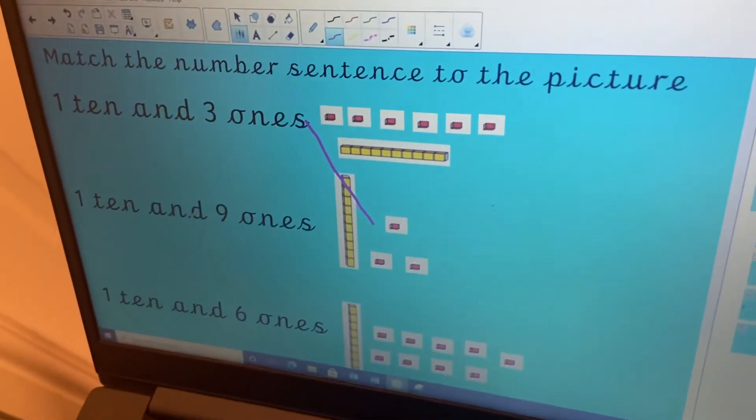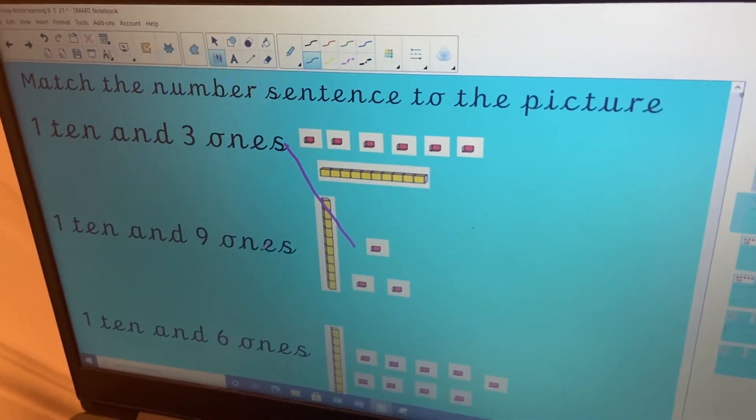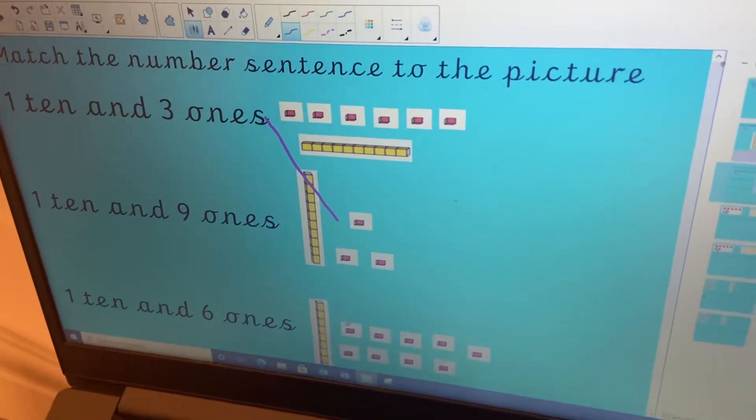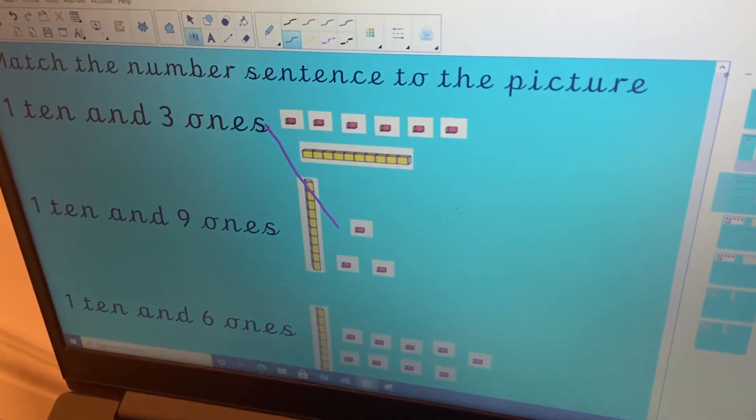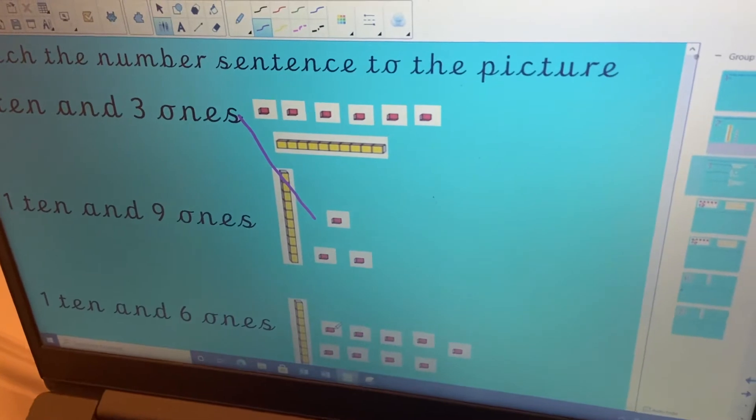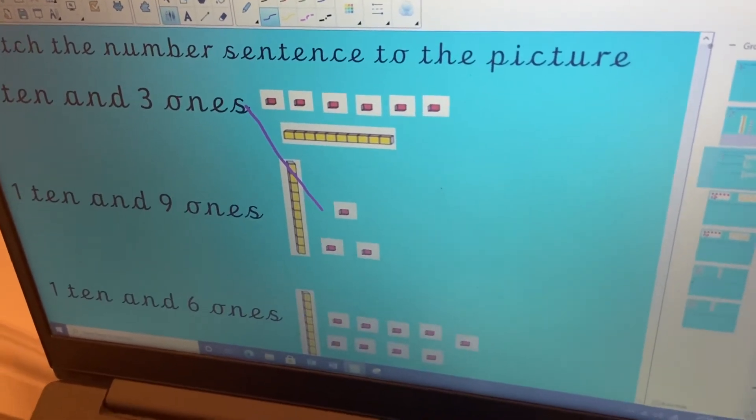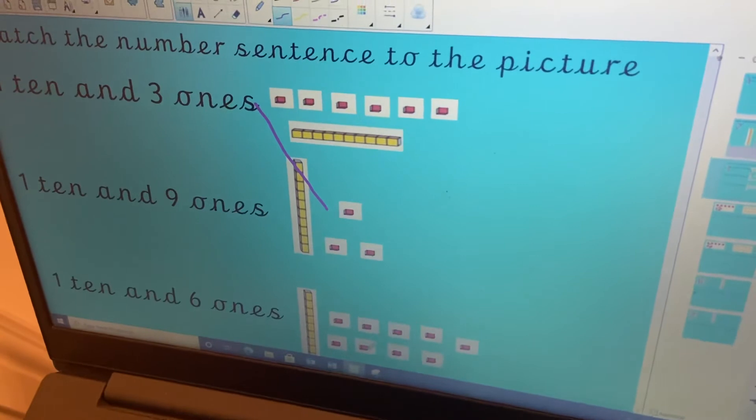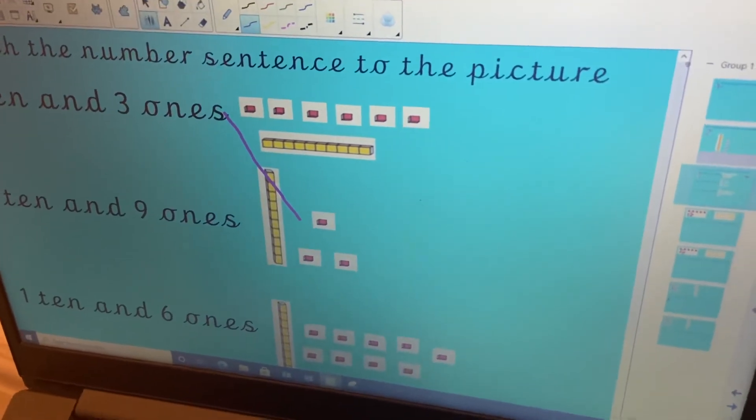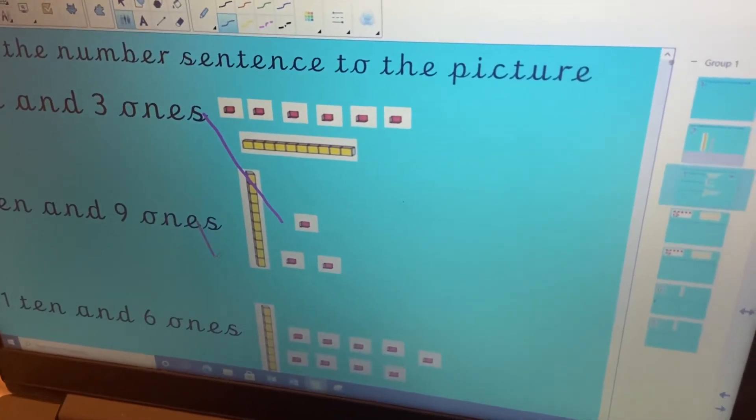And then this sentence says one ten and nine ones. So if I have a look, I'm thinking it might be this one because it's got a lot of ones here. So let's count and see. One, two, three, four, five, six, seven, eight, nine. I'm going to draw a line from there to that one.